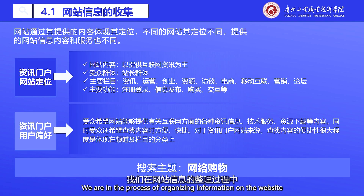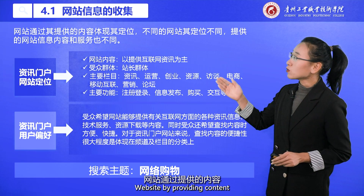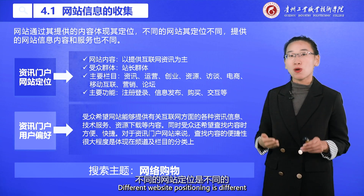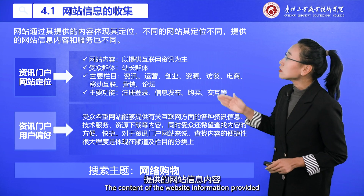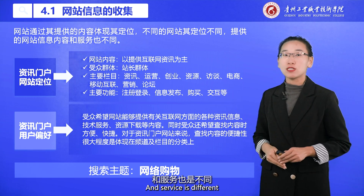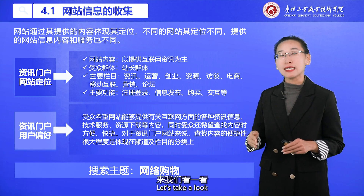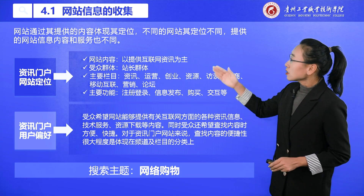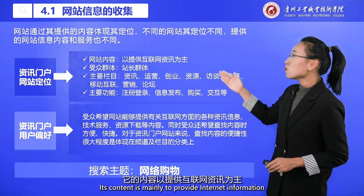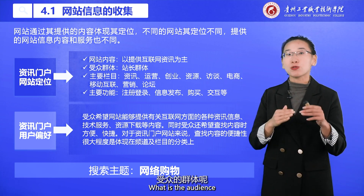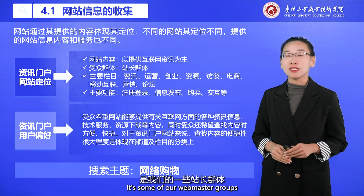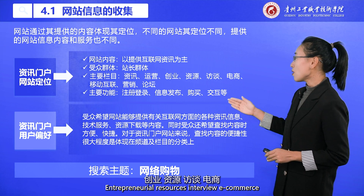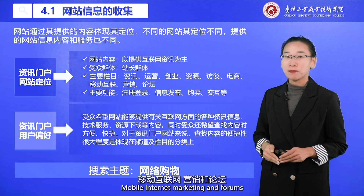In the process of organizing information on the website, the website reflects its positioning through the content it provides. Different websites have different positioning, and the content and services provided differ accordingly. What are the positioning types of information websites? For an information website, its content is mainly to provide internet information. The audience is typically webmaster groups. The main columns include information operations, entrepreneurial resources, interviews, e-commerce, mobile internet, marketing, and forums.